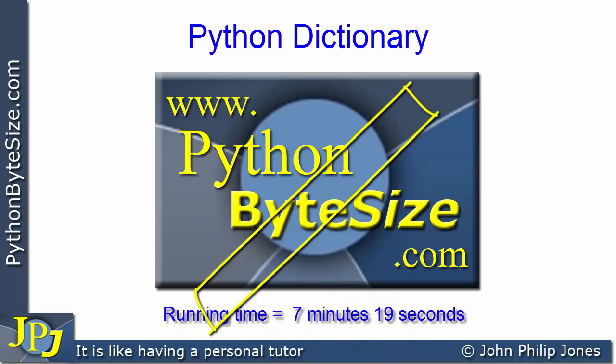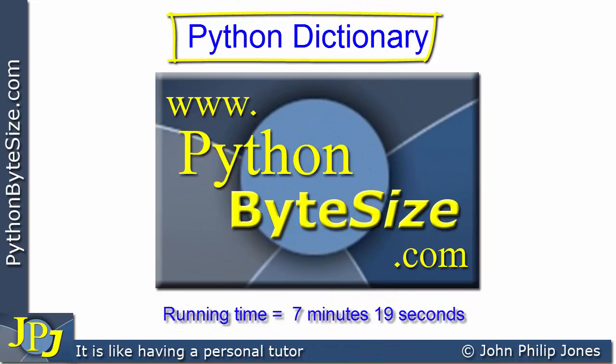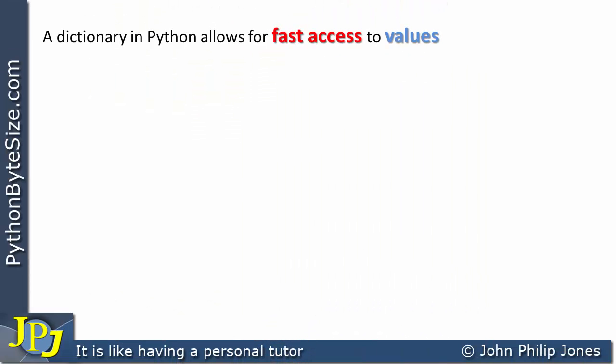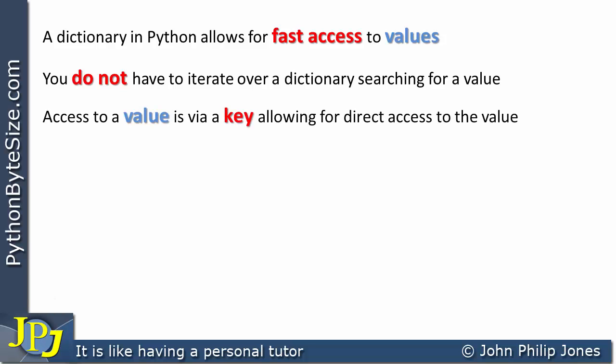In this video we're going to have a look at a Python dictionary. A dictionary in Python allows for fast access to values. You do not have to iterate over a dictionary searching for a value. Access to a value is via the key, allowing for direct access to the value.